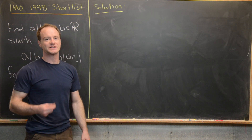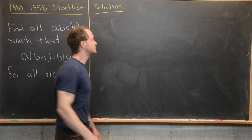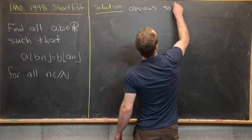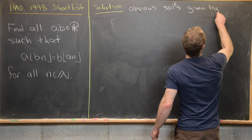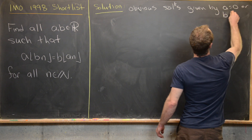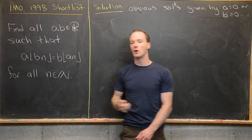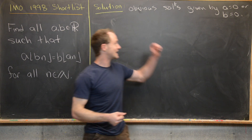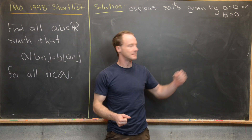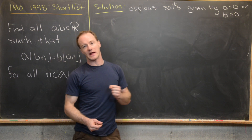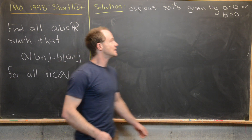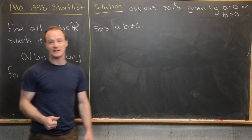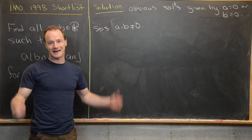Now we're ready to look at a full solution. First, notice the obvious solutions given by A equals zero or B equals zero, because that collapses both sides to zero. So A equals zero with B any real number, or B equals zero with A any real number, both work. We'll now suppose A and B are both nonzero, since those cases are already handled.